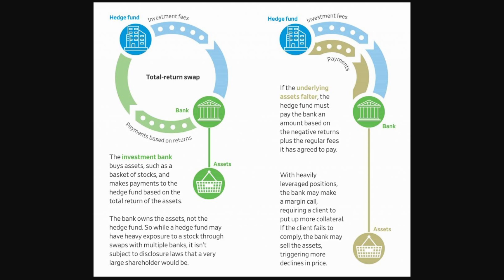Bottom line is, I think the majority of us know what total return swaps, or TRSs, are. That's how Archegos and Bill Huang imploded their company. I just wanted to give a breakdown of a more simple explanation of what those are, and give you the idea that this is much bigger than Archegos. There are a lot of funds that are in ISDA that could be doing something on a much larger scale. I'll explain how there's a little bit of lack of transparency there as well.